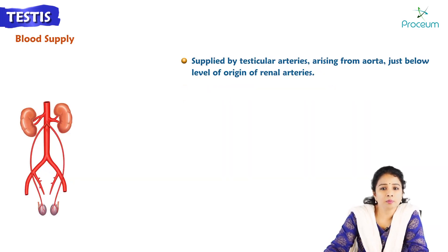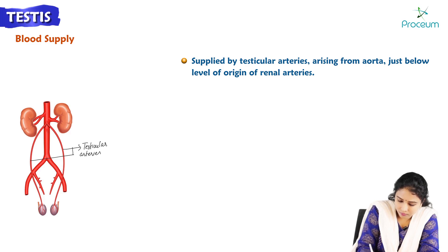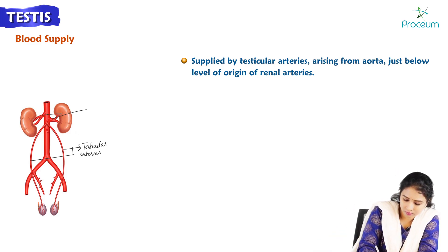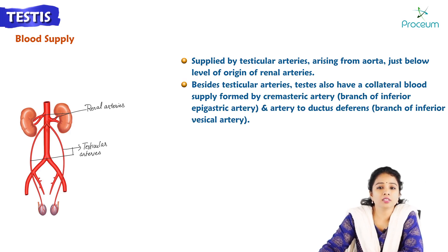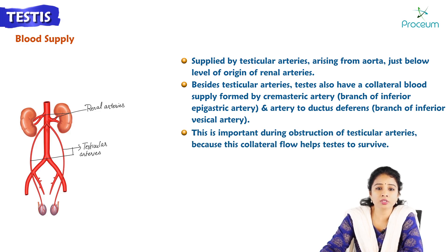The testis is supplied by testicular arteries arising from the abdominal aorta, just below the level of origin of the renal arteries. Besides the testicular arteries, the testis also has a collateral blood supply formed by the cremasteric artery, which is a branch of the inferior epigastric artery, and the artery to the ductus deferens, which is a branch of the inferior vesical artery. This collateral flow is important during obstruction of the testicular arteries, as it helps the testis to survive.